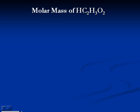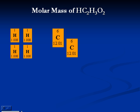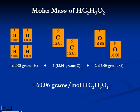To relate the mass of a pure substance to the moles of formula units it contains, we need the molar mass. In the case of acetic acid, the molar mass is 60.06 grams per mole.